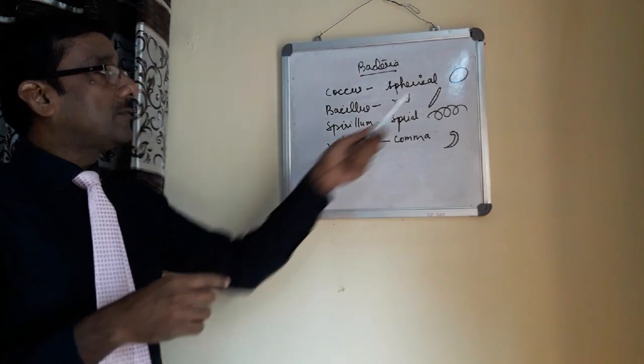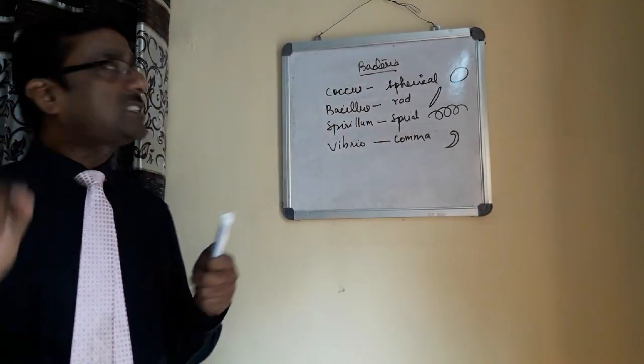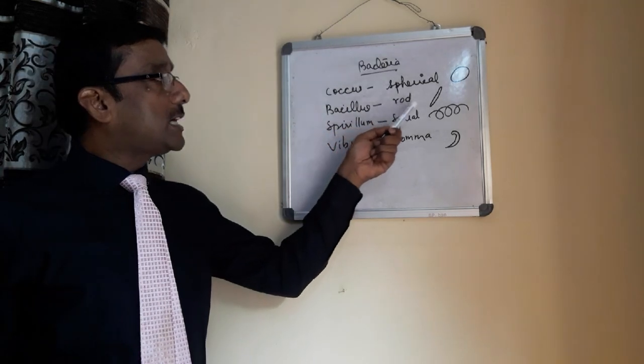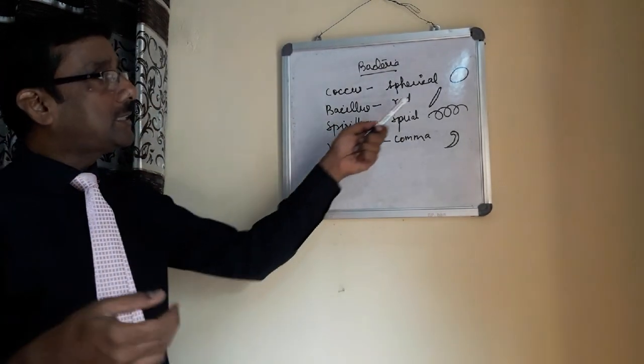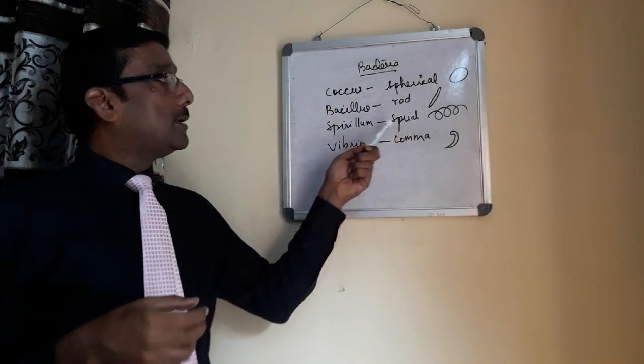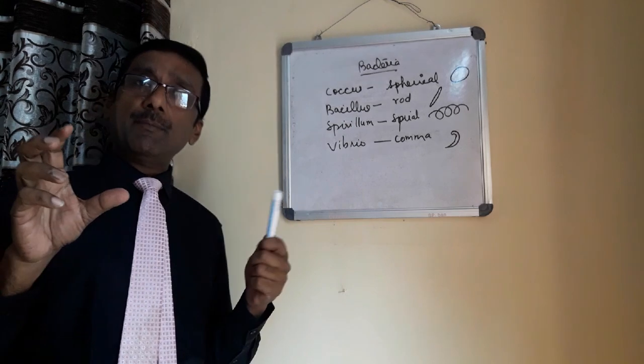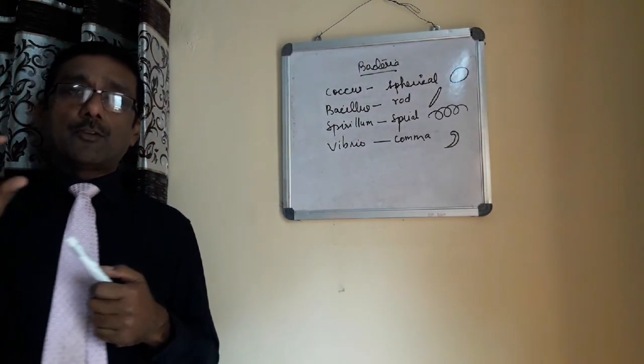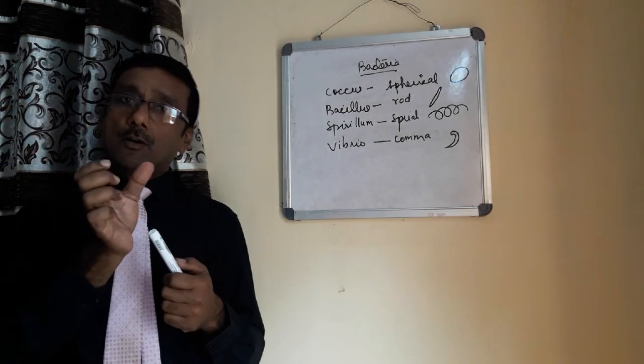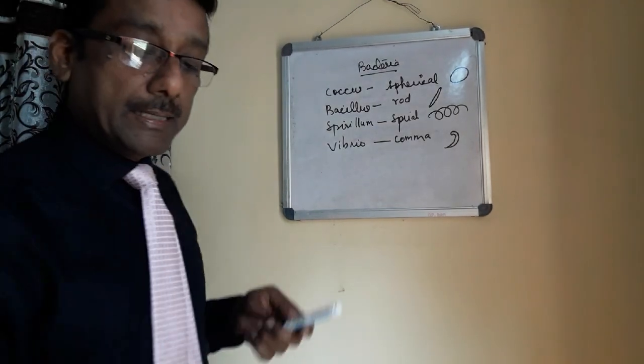Cocci means spherical. Example is staphylococcus aureus, streptococcus aureus. Then bacillus means rod-shaped. Bacilli, lactic acid bacillus. Bacilli we heard means it is in a rod shape. Then you have spirillum, spiral. Then the last one is vibrio, comma shape. Vibrio means vibrio cholerae. It means the shape of the bacteria of cholera is in the shape of a comma. Now, the next one which we are going to discuss here is about the structure of bacteria.